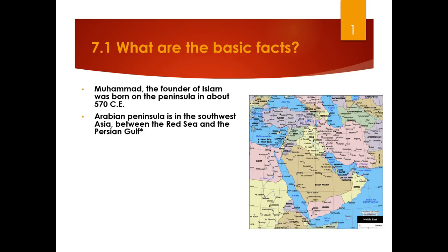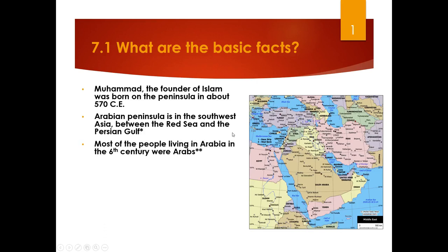The Arabian Peninsula is the southwest corner of Asia, and it's located between the Red Sea and the Persian Gulf. As you can see, there's more than one country there, although Saudi Arabia is definitely the largest. Most of the people living in Arabia in the sixth century were Arabs. When you hear the term Arab, you are referring to someone who is from the Arabian Peninsula. Iran is not on the Arabian Peninsula, so Iranians are not Arabs — they're Persians.